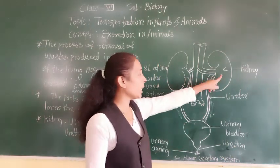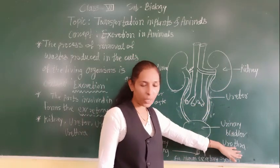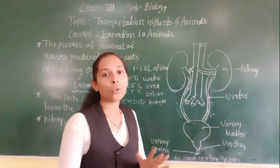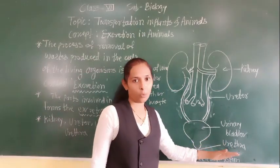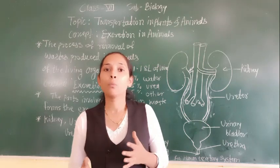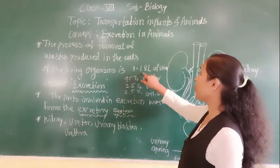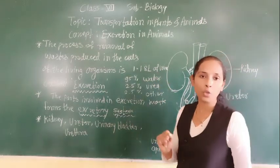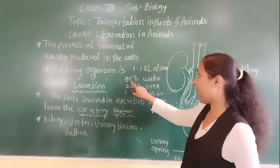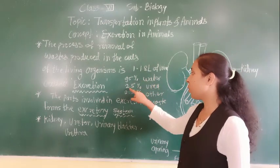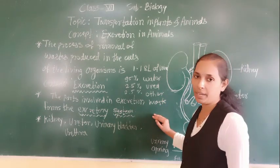So the four organs of the excretory system are kidney, ureter, urinary bladder, and urethra. Normally an adult human being releases 1 to 1.8 liters of urine within 24 hours. That urine contains 95% water, 2.5% urea, and 2.5% other waste.